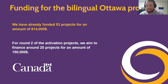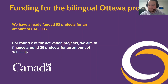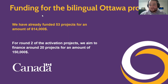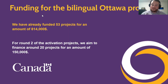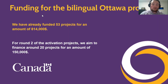If you have any questions during the presentation, feel free to use the Q&A and the chat. For the funding of the Bilingual Ottawa program, we have already funded more than 53 projects for an amount of $814,000. For round two of the activation projects, we aim to finance around 20 projects for an amount of $150,000. The funding is provided by the Government of Canada through the Canada Heritage Program.